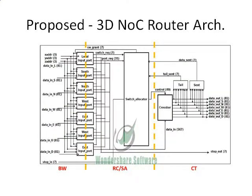This is the proposed three-dimensional network on chip router architecture. In this router architecture, we can see the input port, switch allocator, and crossbar circuit. One of the most important design choices of three-dimensional network on chip implementation is the routing algorithm, as it controls the path decisions that a flit has to follow while traveling along the network.